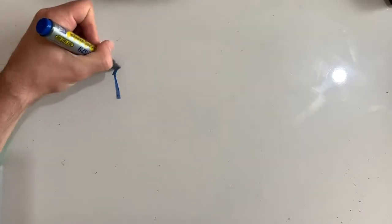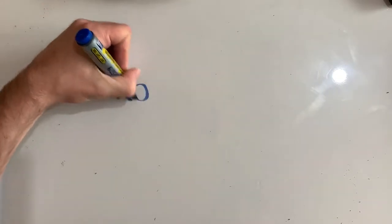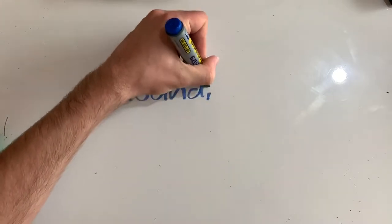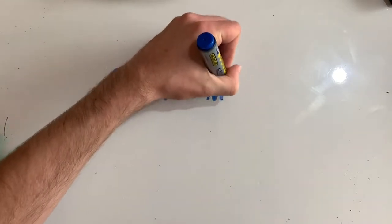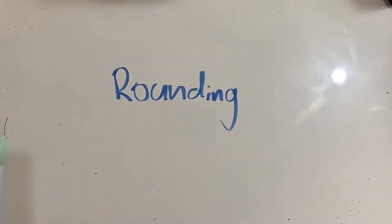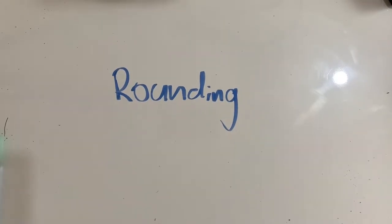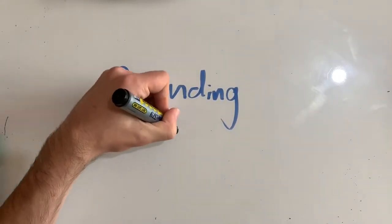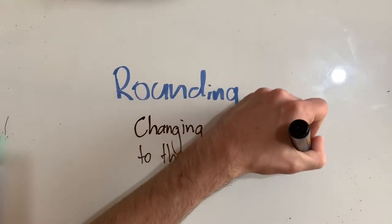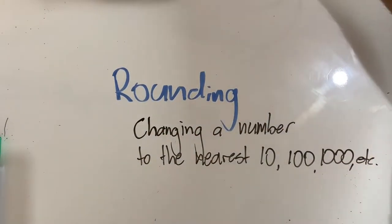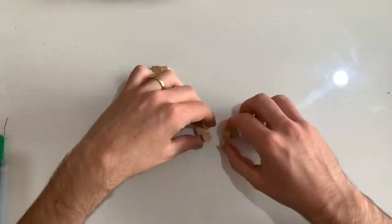To make an estimation, we first need to be confident in our ability to round. Rounding is pretty easy to do once you know how. Rounding means changing a number so that it is to the closest 10, 100, 1000, etc., depending on what we're trying to do. So it will end with the digit zero.